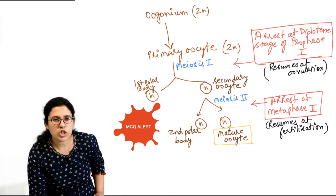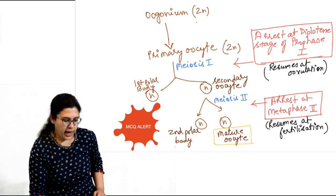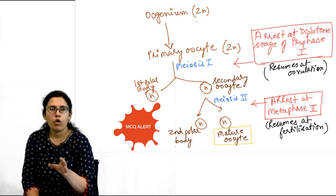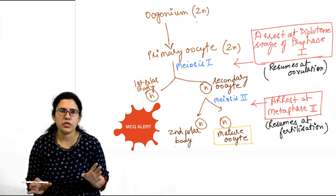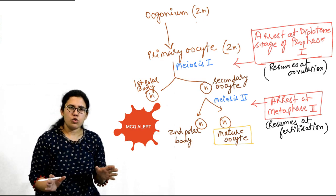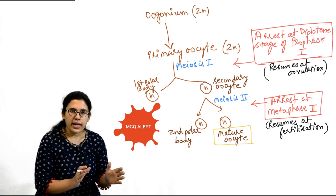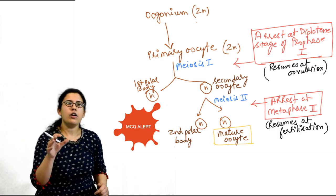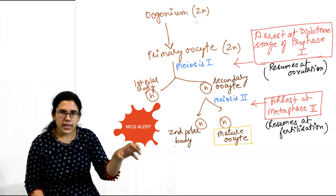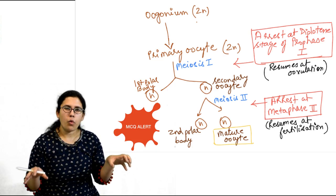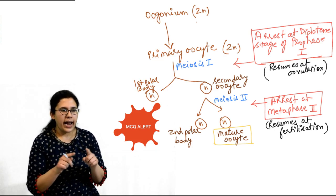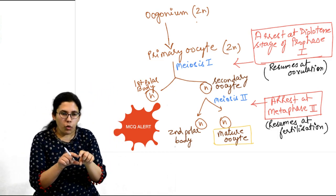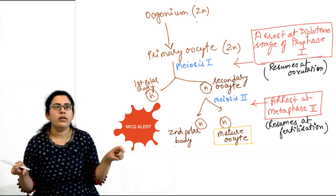Now these oogonia, which are diploid cells, enter into meiosis. Meiosis has two parts: meiosis 1 (reductive division) and meiosis 2 (duplicative division). A diploid cell undergoing meiosis forms haploid daughter cells. These haploid cells then undergo meiosis 2, duplicating themselves, so from one diploid parent cell, there are ultimately four haploid daughter cells.